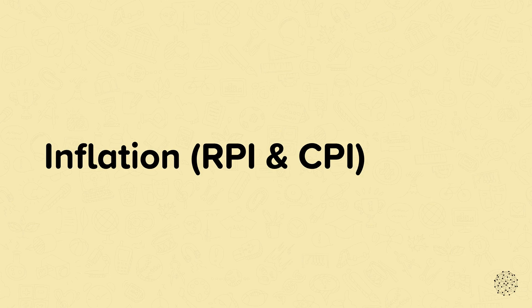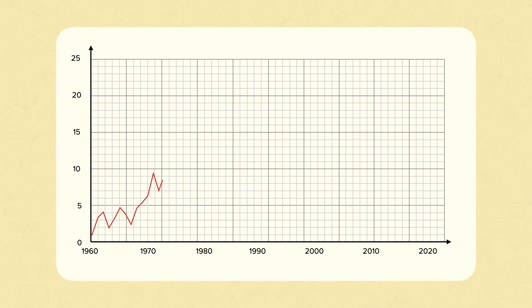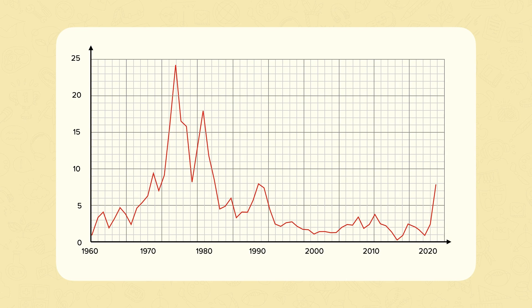Inflation, RPI and CPI. Inflation measures how much more expensive a set of goods and services has become over a certain period, usually a year. It represents the change in the price of goods and services we buy. The annual rate of inflation shows how much higher or lower prices are compared with the same month a year earlier. It indicates changes to our cost of living.